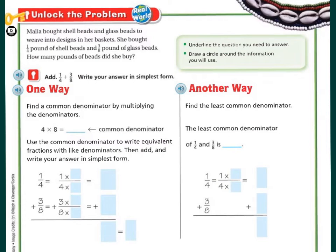Let's unlock the problem. Malia bought shell beads and glass beads to weave into a design in her baskets. She bought one-fourth pound of shell beads, three-eighths pound of glass beads. How many pounds of beads did she buy? First, let's underline the question that you need to answer. We're going to underline how many pounds of beads did she buy.